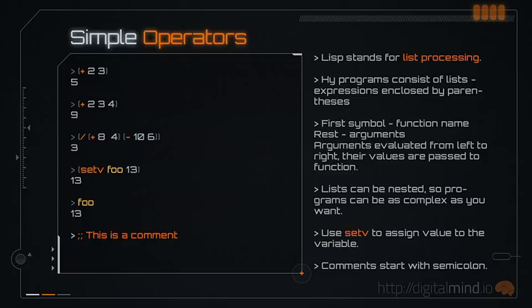Lisp stands for list processing, which is why Hi programs consist of lists. Lists are just expressions enclosed in parentheses. The first symbol in a list is usually a function name, and the rest are the arguments you are passing to the function. This expression adds the numbers 2 and 3 and returns 5. It may seem unusual to write it this way instead of simply saying 2 plus 3, but once you get used to it, you realize it is a very convenient feature. It is called prefix notation.